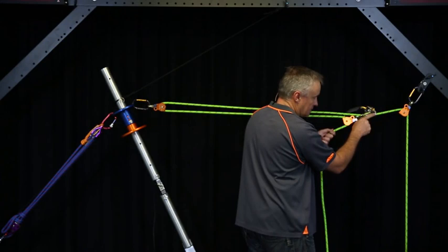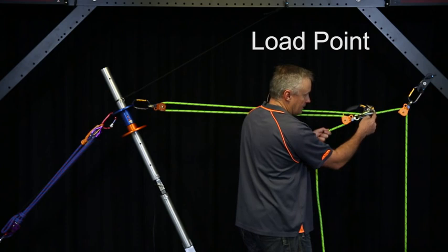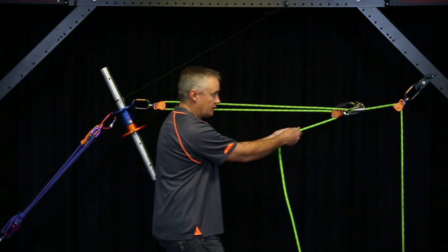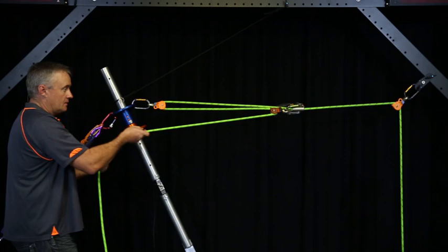So we've attached a device to the rope to allow us to connect the travelling pulley to that rope. Now essentially this point here becomes the load point and it's connected directly to the load. So as we haul up on that rope our load comes up.